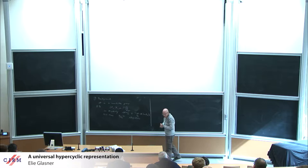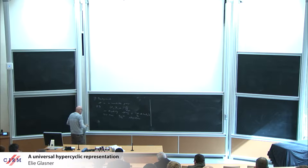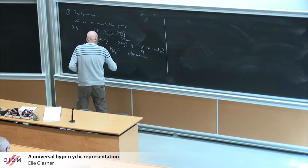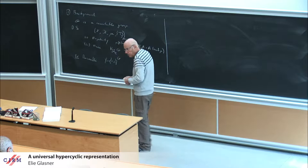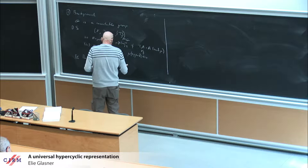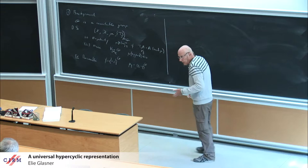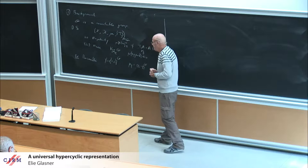I will assume two requirements. The first is ergodicity, which means that mu A is either 0 or 1 whenever TGA equals A, everything mod mu for all G. And freeness - for every G not the identity, the set of fixed points has measure 0.